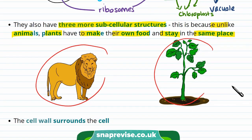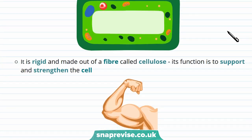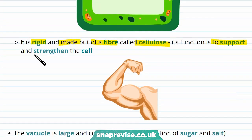The cell wall surrounds the cell on the outside of the cell membrane. It's rigid and it's made out of a fibre called cellulose. Its function is to support and strengthen the cell — for example, it makes sure that the plant cells don't burst when they take in water.